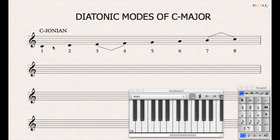Ionian has the semitone steps between 3 and 4 and 7 and 8. The rest of the steps are whole tone steps.